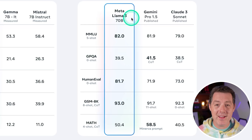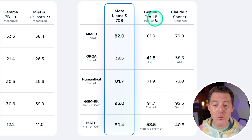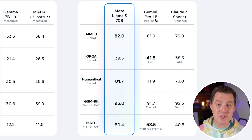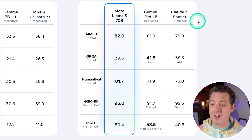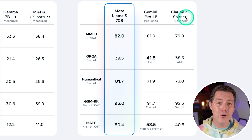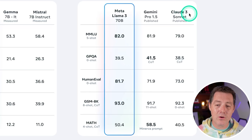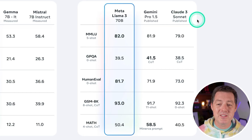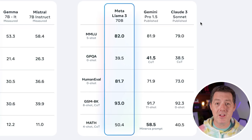Then we have the large model, and here's the interesting thing. Meta decided to compare their large 70B model against Gemini Pro 1.5 — Google's top-of-the-line million token context window model — and Claude 3 Sonnet, but not Claude 3 Opus. Claude 3 Opus is pretty much regarded as the best model out there, closed or open. So it's interesting that they only compared it against Claude 3 Sonnet, which is the middle model of all three Claude models.